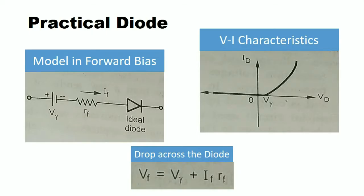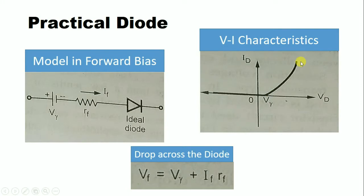The first model is the practical diode. This practical diode is represented using an ideal diode with a forward resistance and a cut-in voltage. Here, the cut-in voltage is given as V gamma, the forward resistance is represented as RF, and the current flowing through the diode is given as IF. The diode is forward biased after the cut-in voltage V gamma, and we get a slope in the characteristics due to the diode forward resistance RF. The voltage drop across the diode is given as VF = V gamma + IF × RF, where V gamma is the cut-in voltage, IF is the current, and RF is the forward resistance.